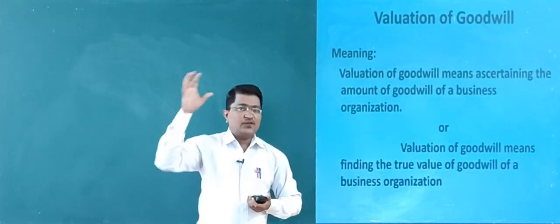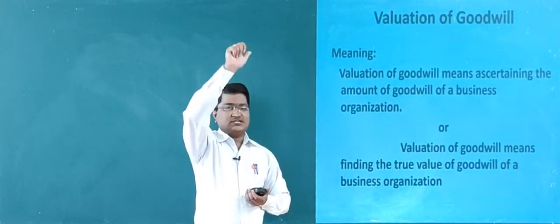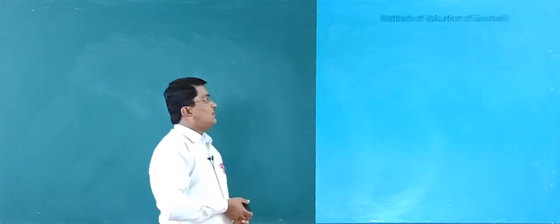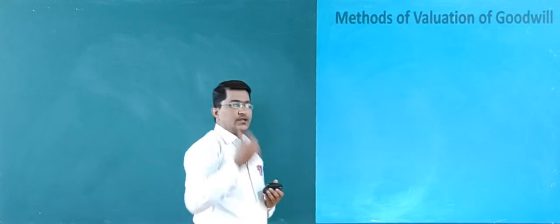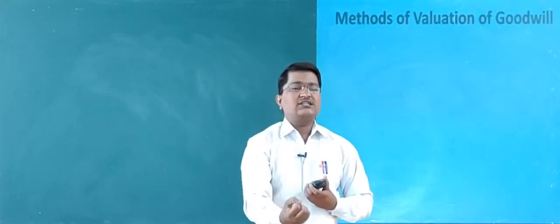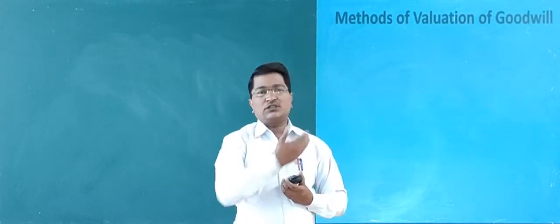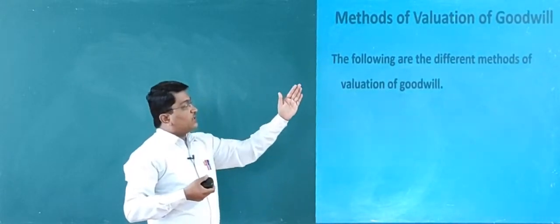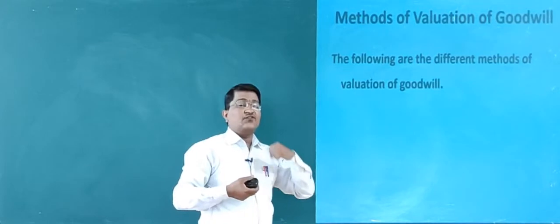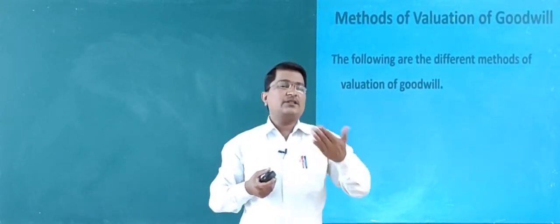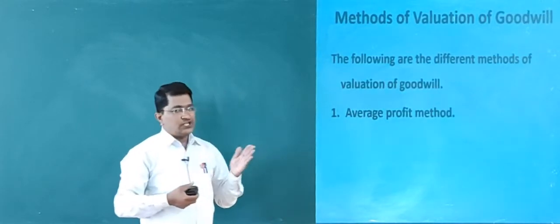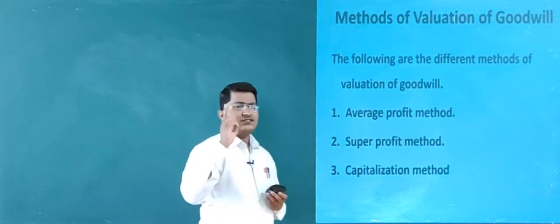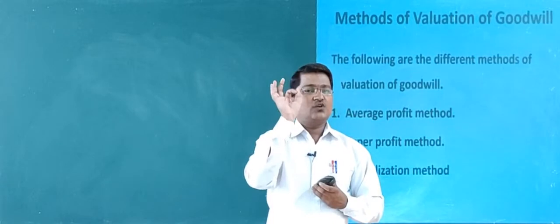To ascertain the value of goodwill, there are different methods. Let's see the methods for valuation of goodwill. The following are the different methods of valuation of goodwill. First one is average profit method, second is super profit method, and third is capitalization method. These are the three important methods for valuation of goodwill.